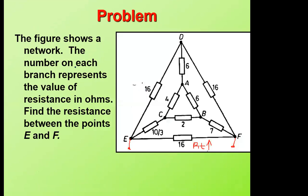The figure shows a network. The number on each branch represents the value of the resistance in ohms. Find the resistance between points E and F. So I pick point E and point F — that is where I have to calculate the total resistance. When simplifying a circuit, you start from the far end of the terminals. If the terminals are on the left, start from the right; if on the right, start from the left; if on the bottom, start from the top.